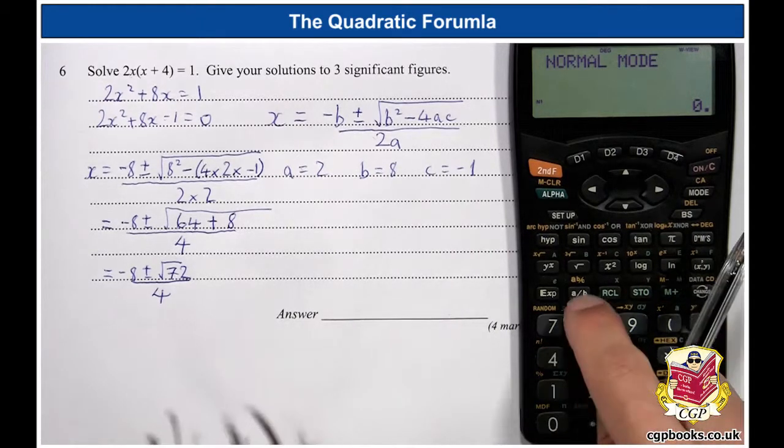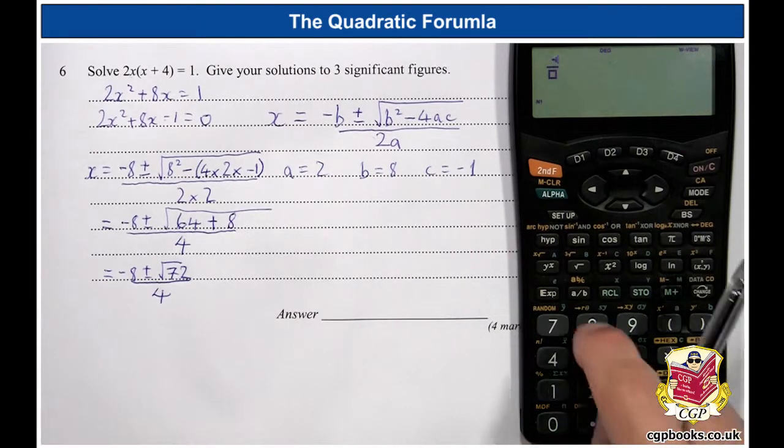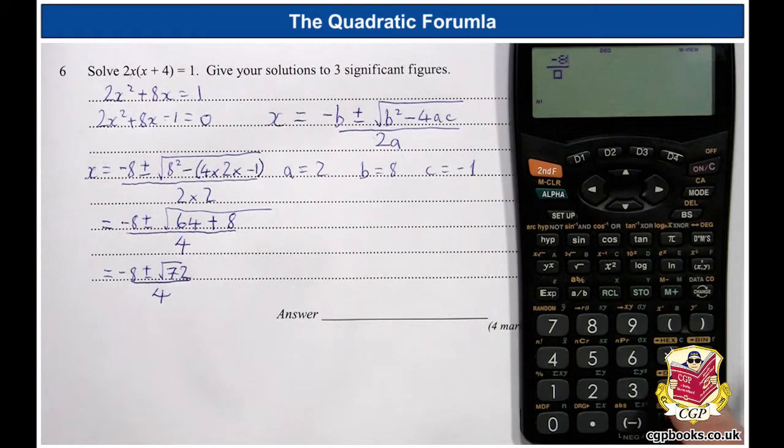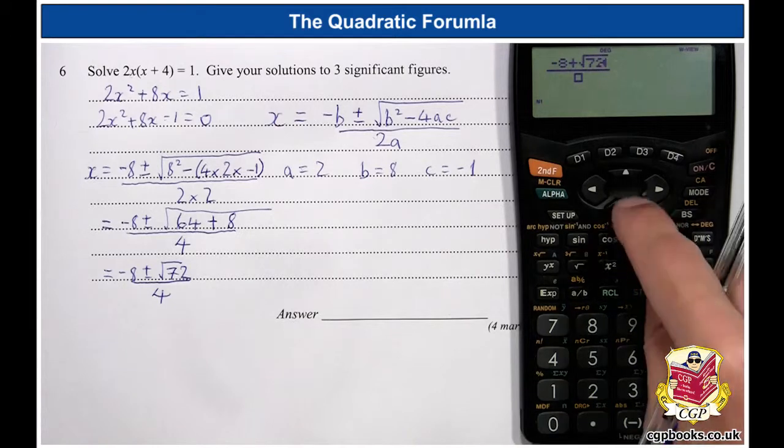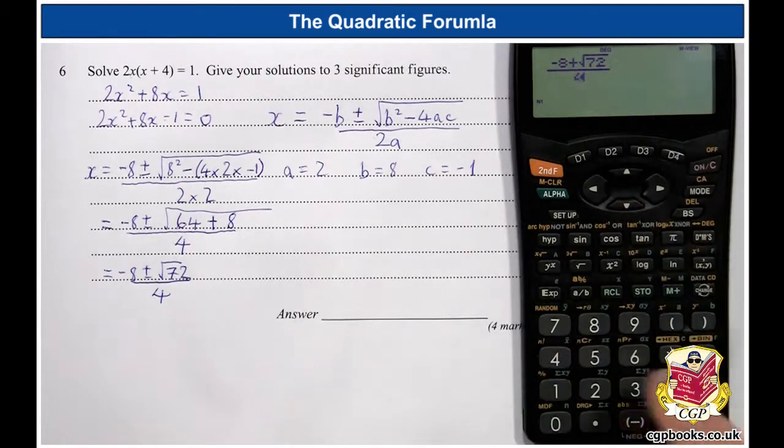So, this is where you need to know where all the buttons are. Fraction button, there it is. Fraction, right, minus 8. Do plus first of all, plus the square root of, square root 72.